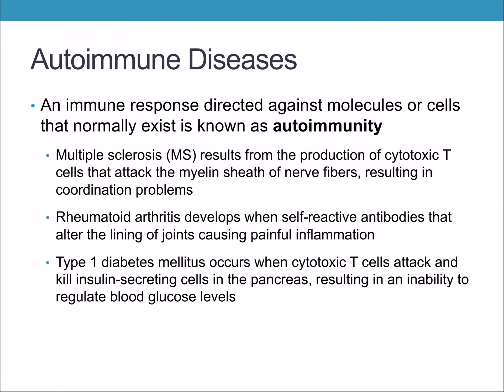Another problem with the immune system is autoimmunity. The immune system's job is to distinguish self from non-self. If it cannot and starts attacking self, that's autoimmunity. For example, multiple sclerosis (MS) involves cytotoxic T cells attacking the body's own myelin sheath of nerve fibers, leading to an inability to control muscles. Rheumatoid arthritis is when the immune system attacks joints, causing painful inflammation and degradation. Type 1 diabetes — unlike type 2, which is caused by diet — is genetic, occurring when cytotoxic T cells attack and kill the insulin-secreting cells of the pancreas, preventing blood glucose regulation.